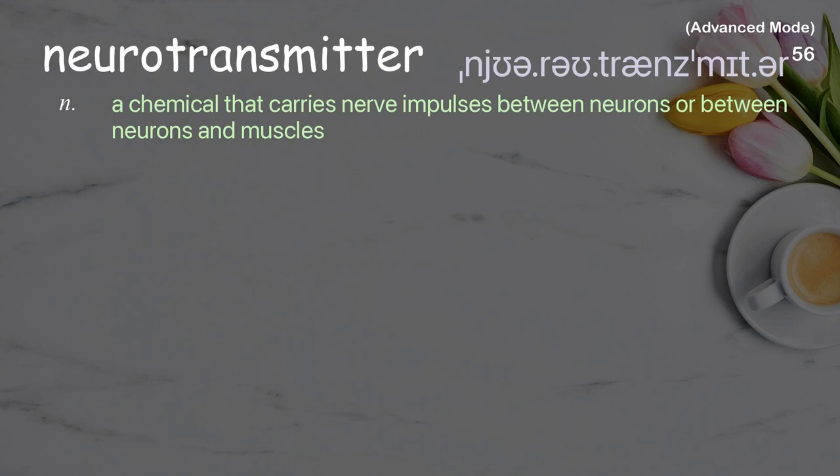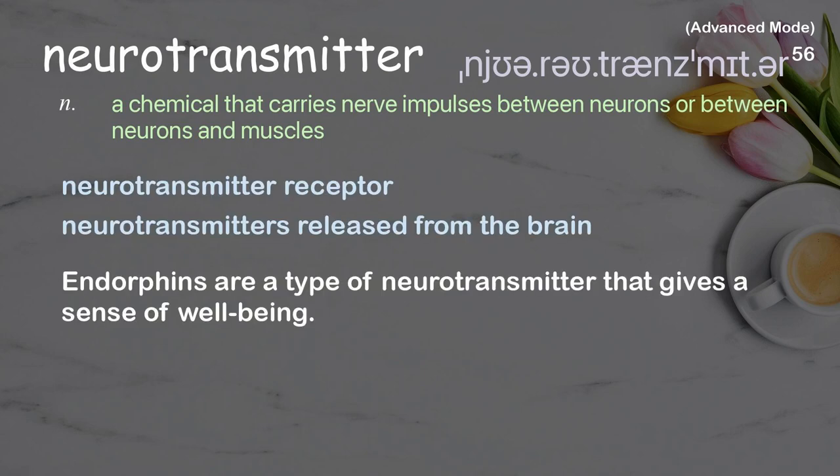Neurotransmitter: a chemical that carries nerve impulses between neurons or between neurons and muscles. Examples: neurotransmitter receptor, neurotransmitters released from the brain. Endorphins are a type of neurotransmitter that gives a sense of well-being.